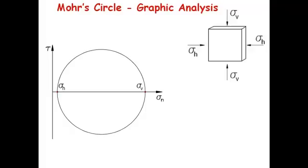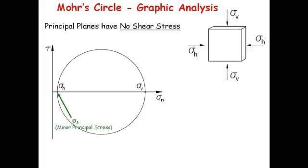The principal planes are those planes that have no shear. In this case, the vertical and the horizontal planes are the principal planes. Now, the stresses corresponding to those planes are what we call principal stresses. And there's two of them, a minor and a major. As the word implies, major is always the bigger and minor is the smaller. So those are basically graphically, they are located at the intersection of the circle with the x-axis.